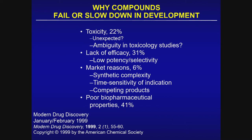The reasons why compounds fail or slow down in their development include toxicity that becomes appreciated in large animal studies or even first emerging in early clinical trials. Ambiguities in toxicology studies are a basis for reconsideration of a molecular lead. Lack of efficacy for the intended goal may come from low potency or failure of a molecule to have appropriate selectivity. Market reasons may relate to synthetic complexity or the emergence of competing products considered better ideas.